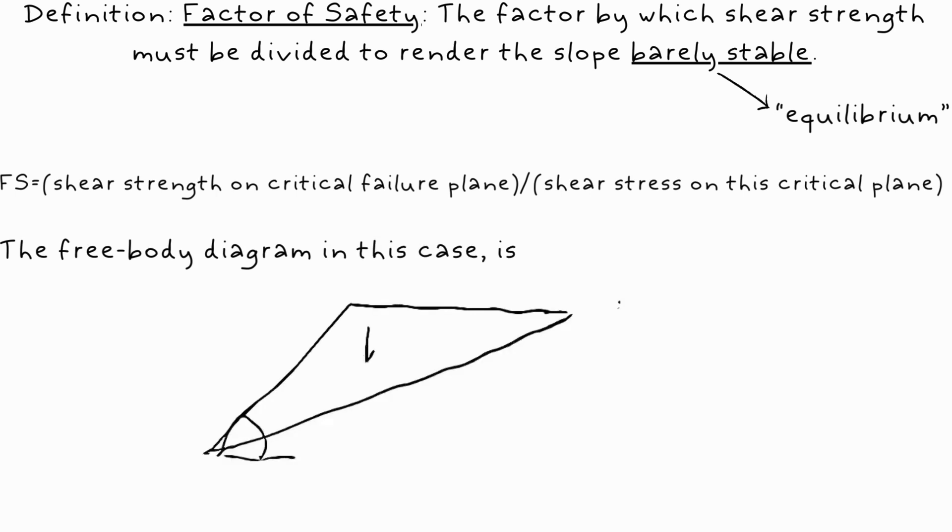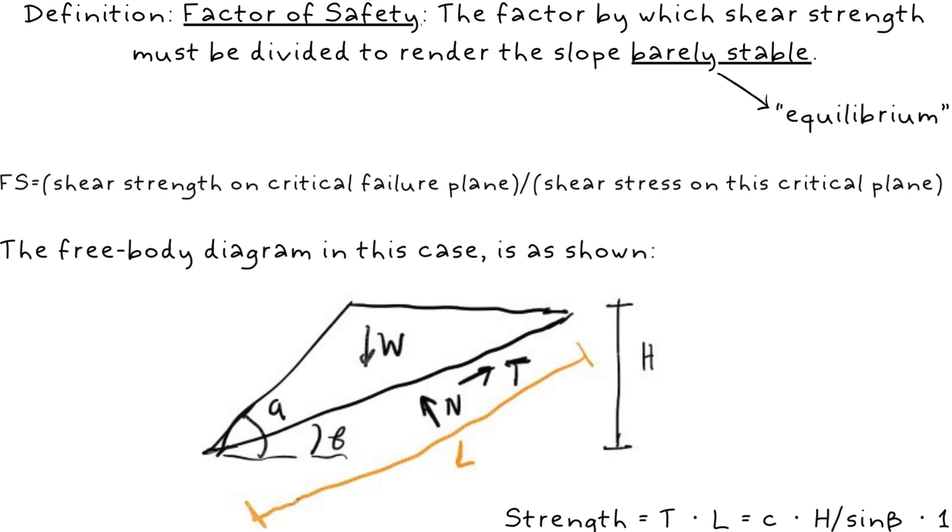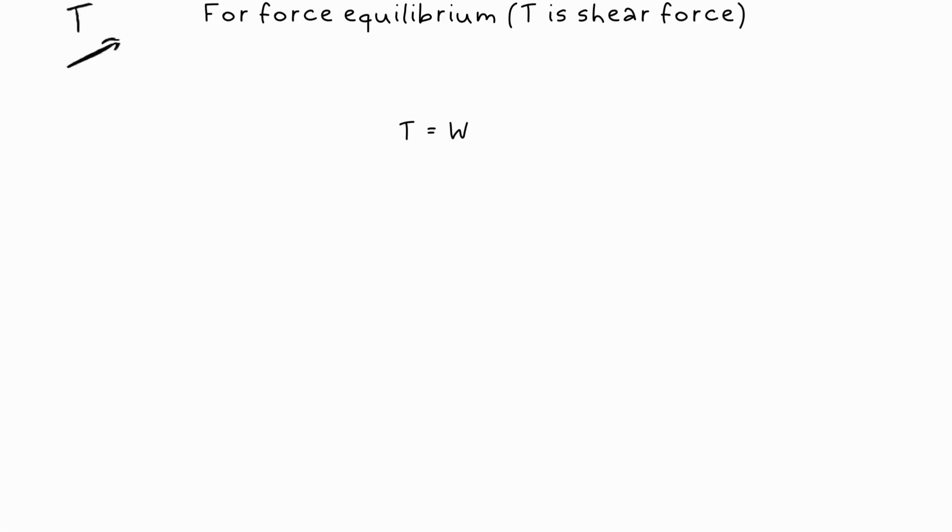Then, we can draw the free body diagram, assuming phi is 0, and define the slope's strength. Using basic trigonometry, we can reform the FS equation as shown here, to make things easier.